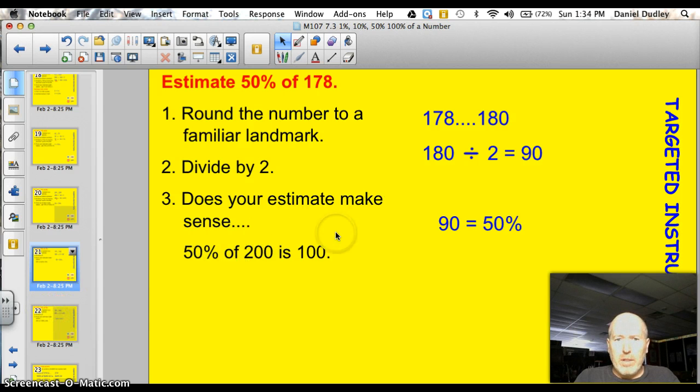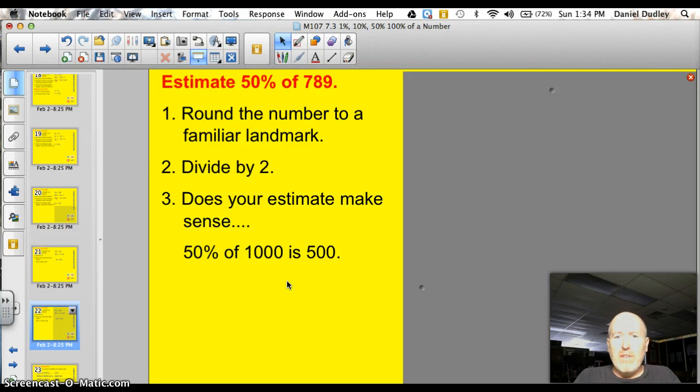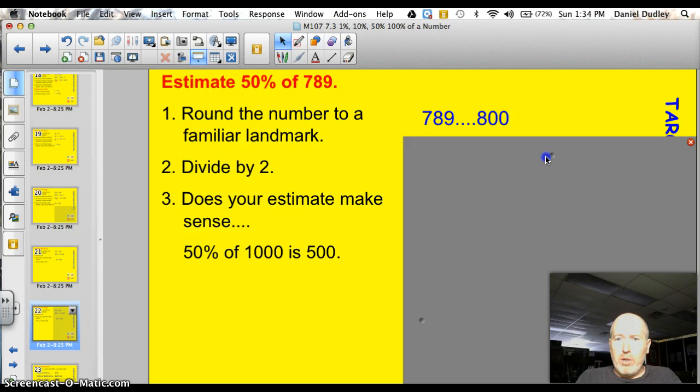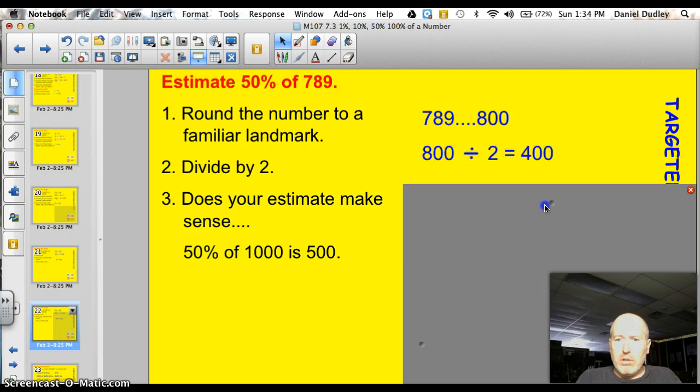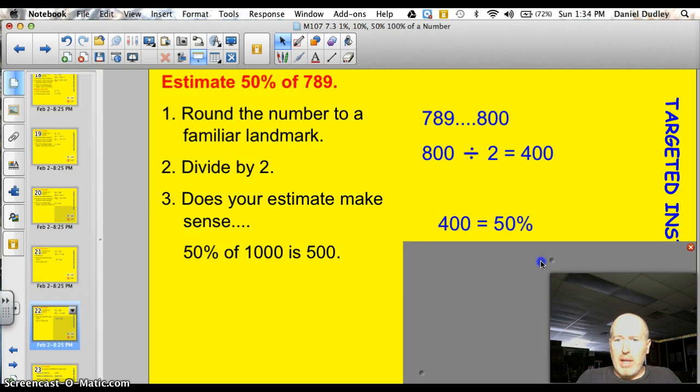All right, time for you to try one. Estimate 50% of 789. Go ahead. All right, let's see. I rounded to a familiar landmark of 800. Then, I divided by 2, and I got 400. Well, does this estimate make sense, that 50% is 400? Well, yeah, 50% of 1,000 is 500, so that makes total sense. Good job.